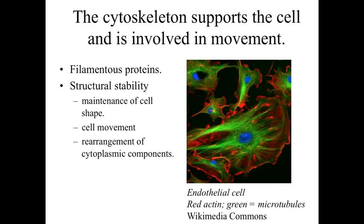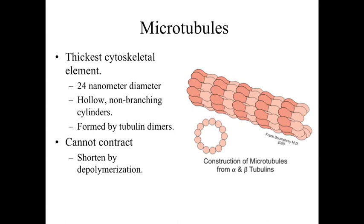The final elements we'll discuss in this introduction to cytology are the cytoskeleton. Like the skeleton of your body, the cytoskeleton is involved with supporting the cell and movement. Instead of bones, the cytoskeleton contains filamentous proteins that provide structural stability, maintain cell shape, and are involved with movement and rearrangement of things within the cell. There are three main types of cytoskeletal elements.